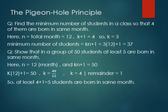Dividing: 12×4 equals 48, so k equals 4 with remainder 1. Therefore k plus 1 equals 4 plus 1 equals 5, meaning at least 5 students are born in the same month. This proves that 5 students are born in the same month.